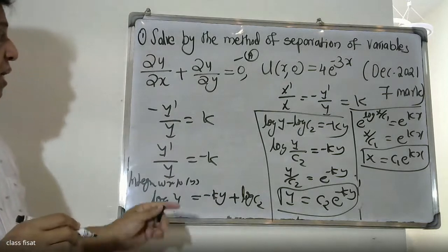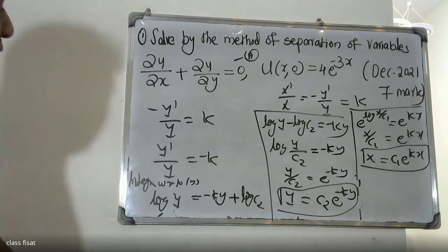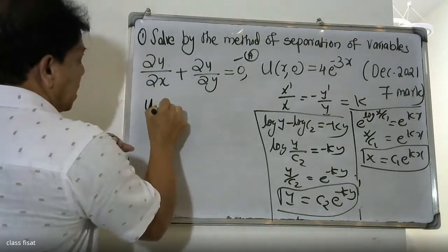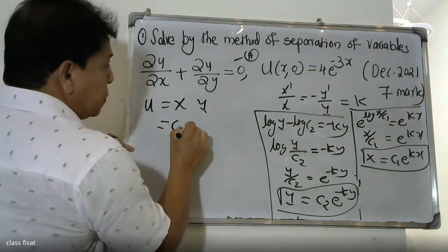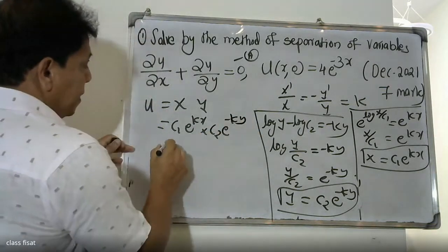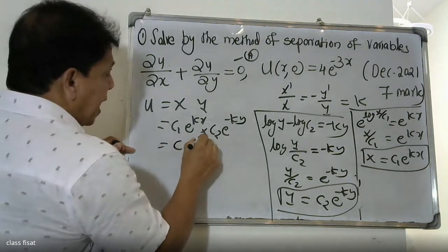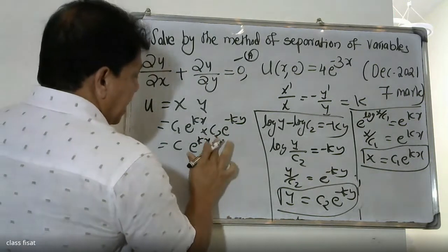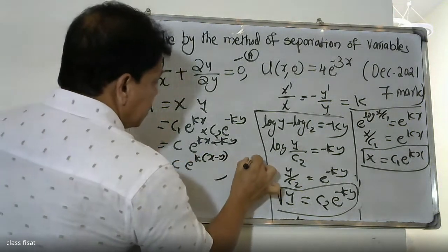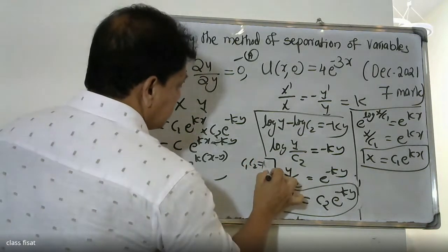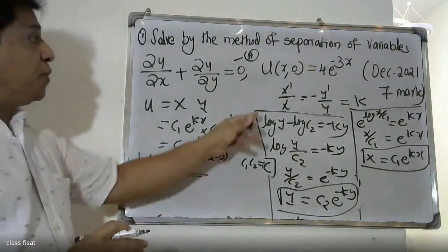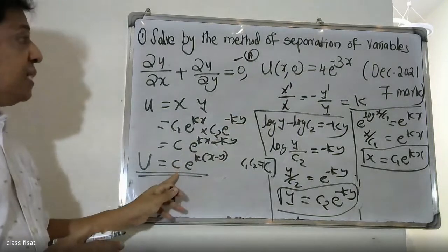Now combining X and Y: the solution u = X·Y = c1·e^(kx) · c2·e^(−ky) = c·e^(k(x−y)), where c = c1·c2. Now we apply the boundary condition to find c and k.